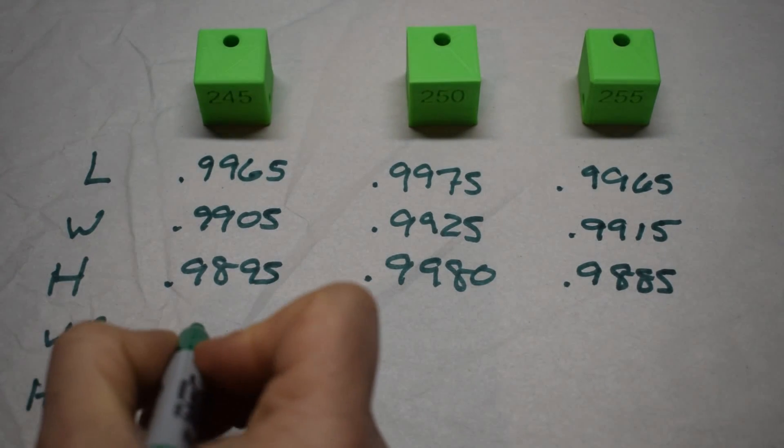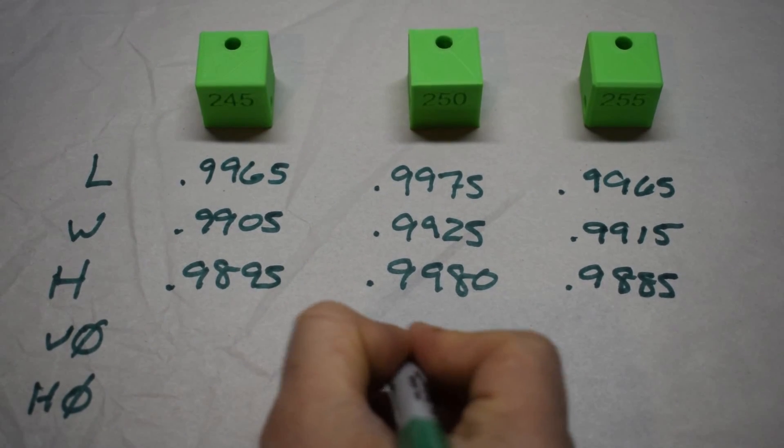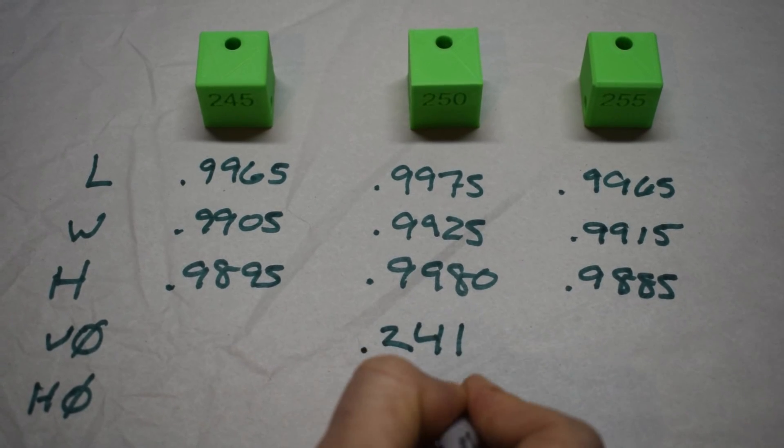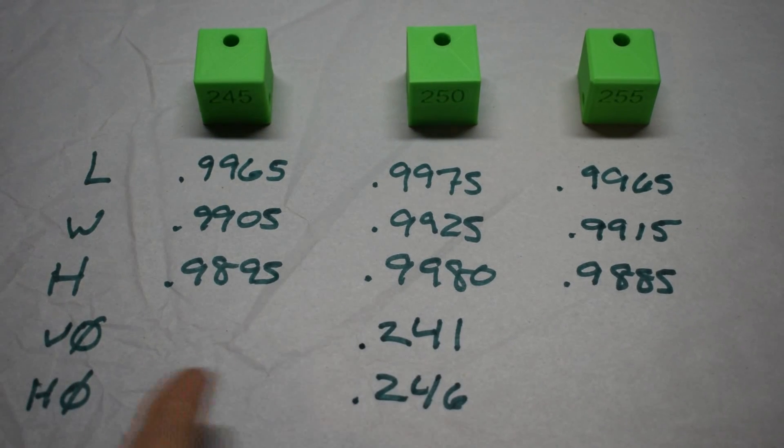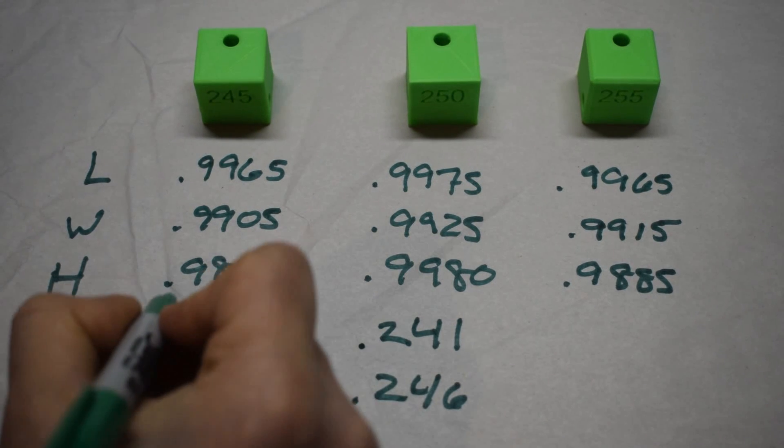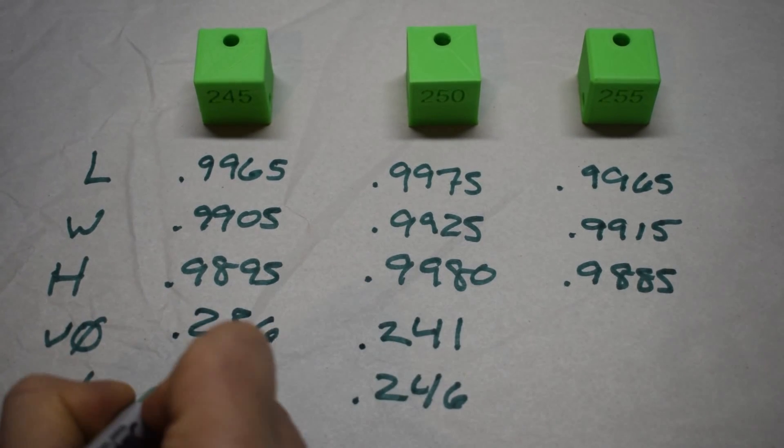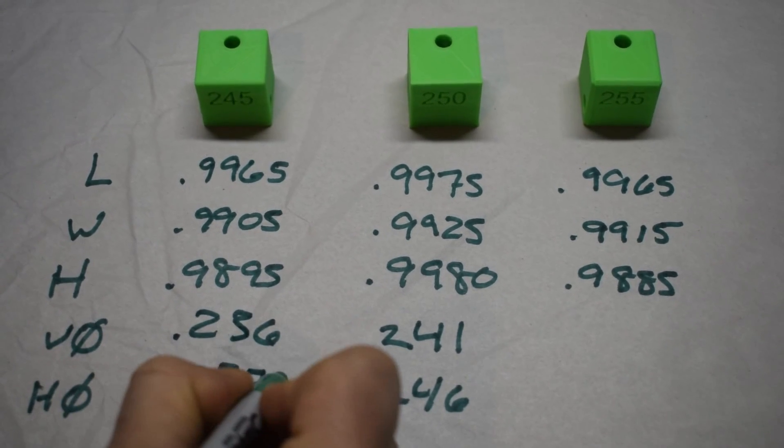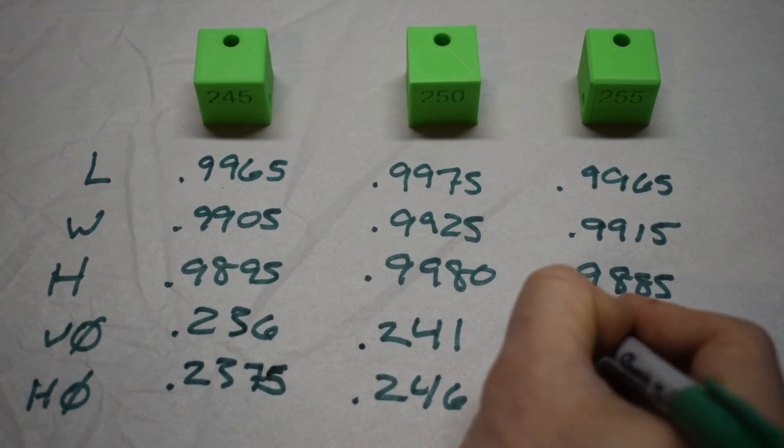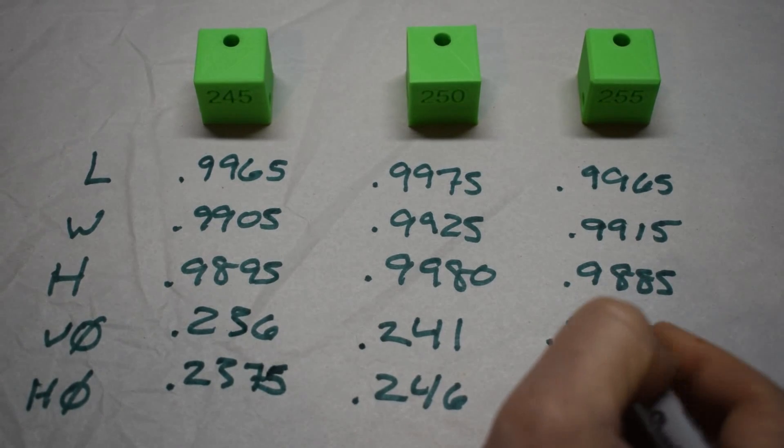Now looking at the diameters, for the vertical hole in the 0.250: 0.241, and for the horizontal: 0.246. For the smaller size hole: 0.236 and 0.2375. For the oversized hole: 0.2485 and 0.251.